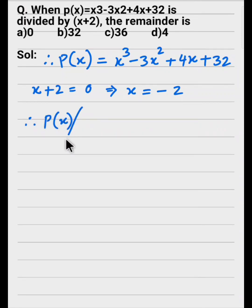p(x) at x equal to minus 2. We have to place this value: minus 2³, then minus 3 times minus 2², plus 4 times minus 2, and then plus 32.